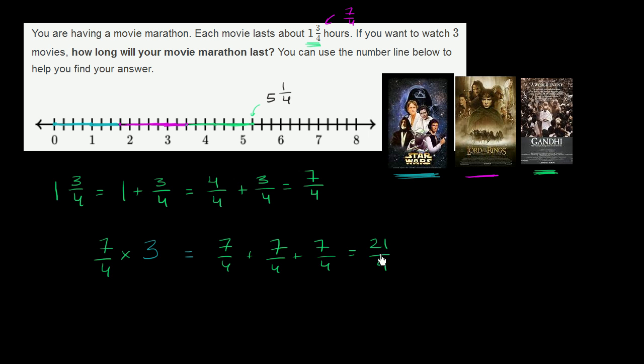If you wanted to convert this into a mixed number, 21 over 4 is the same thing as—well, 4 goes into 20 evenly. You could call this 20 over 4 plus 1 over 4, and 20 over 4 is the same thing as 5. So it's 5 and 1 fourth, which is exactly what we saw here.